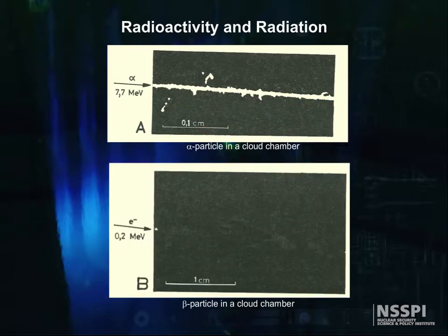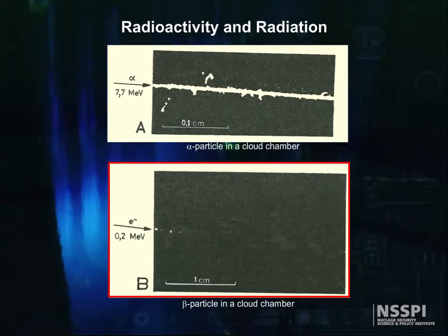Beta particles are electrons or anti-electrons that are ejected from the nucleus. Beta rays are much less densely ionizing than alpha particles, and therefore their range is greater than for alpha particles if they have the same energy. The range of a beta particle in air is about four meters per MeV of kinetic energy.